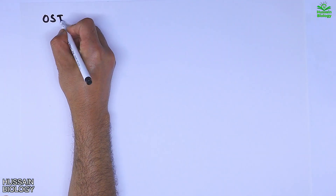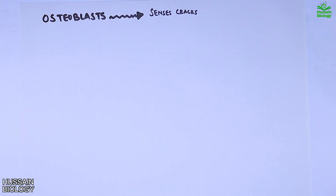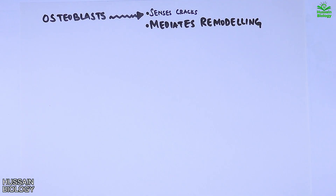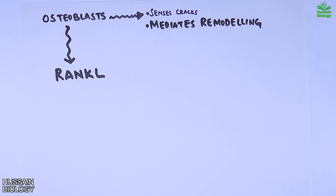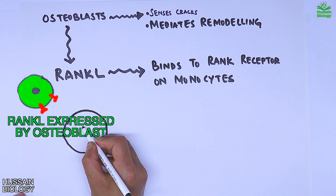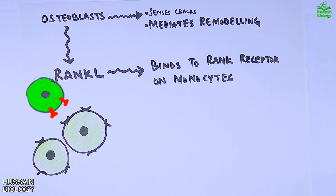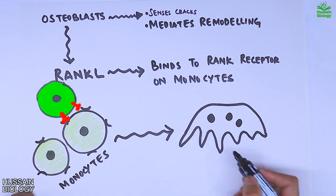Moving towards the remodeling process, the osteoblast first senses cracks or detects old bone tissue, which initiates bone remodeling. The osteoblast then drives the RANKL pathway — RANKL expressed by the osteoblast interacts with RANK on monocytes. RANK binds the monocytes and transforms them into osteoclasts.